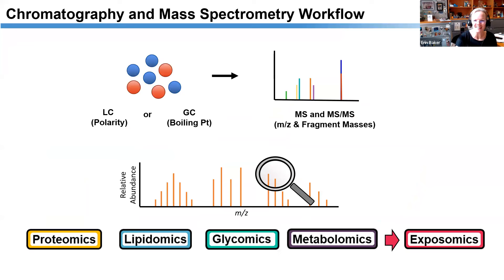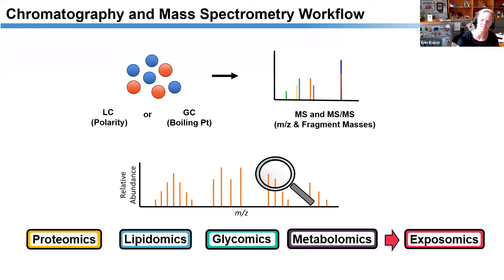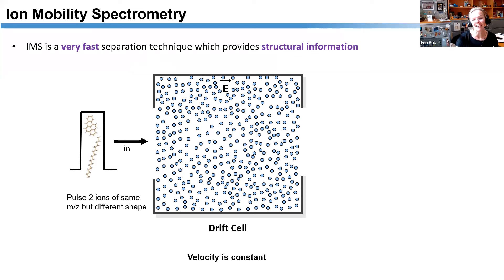For the different omic measurements, most people do some kind of chromatography — liquid chromatography for polarity-based separation, or gas chromatography for boiling-point separation — then couple it with mass spectrometry to identify molecules and get confidence through fragmentation patterns. A lot of small molecules can map back to hundreds of molecules with the same or very similar mass values. We use ion mobility coupled between those two to get even more confidence in our identifications.